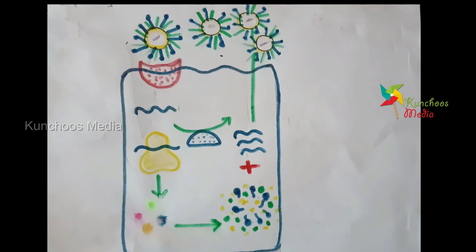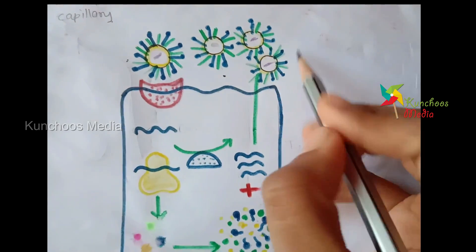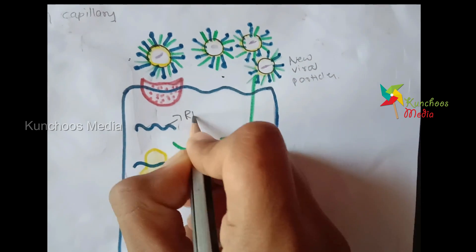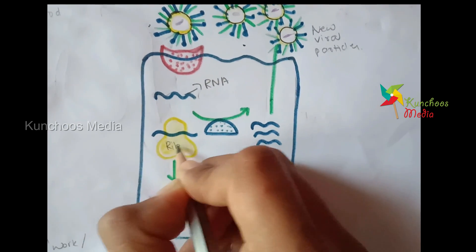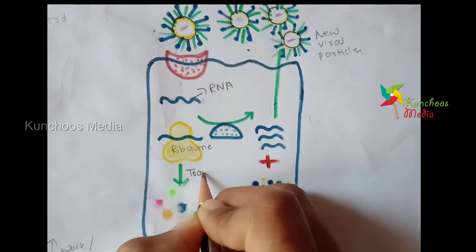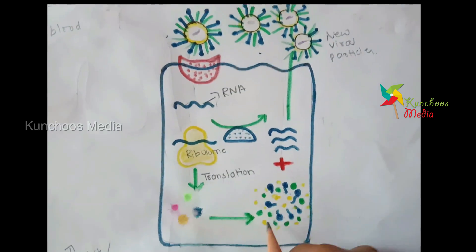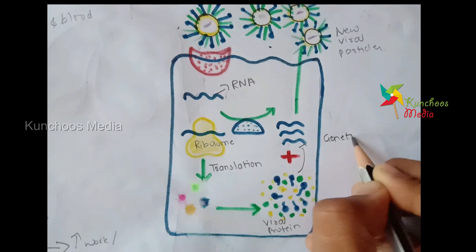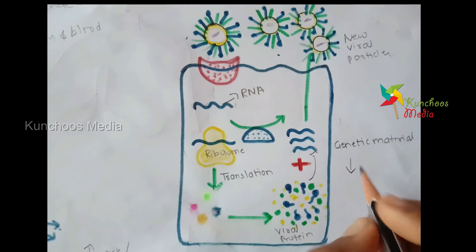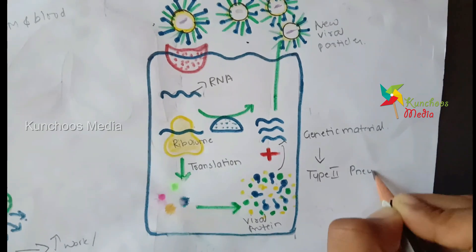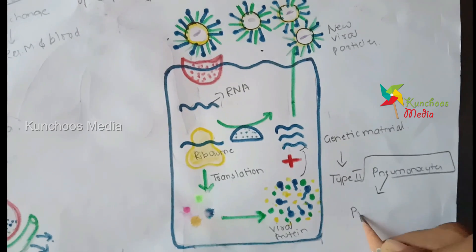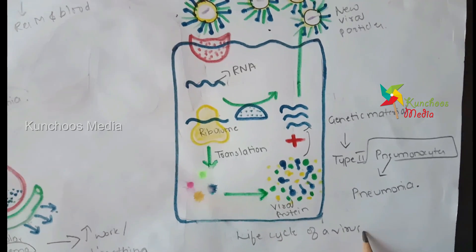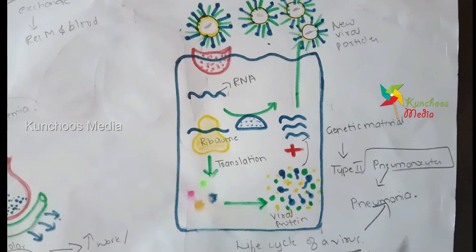When new virus particles enter a person already affected with the virus, this is the RNA — it penetrates through all the membranes and gets attached to our ribosome. Through a process called translation, the RNA is converted to viral proteins. These viral proteins combine with our genetic material and lead to the formation of certain cells called type 2 pneumonocytes. This is how the life cycle of a virus continues, leading to pneumonia as the cycle keeps going.